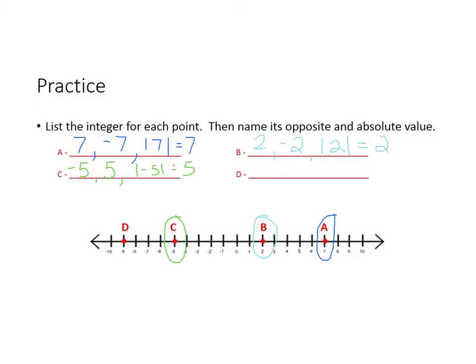Let's do D. The integer for that point is negative nine. The opposite of negative nine is nine. And the absolute value of negative nine is nine.